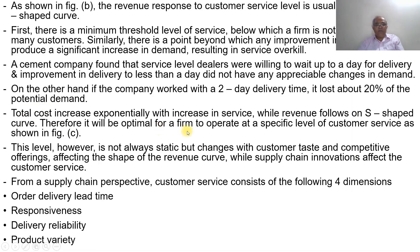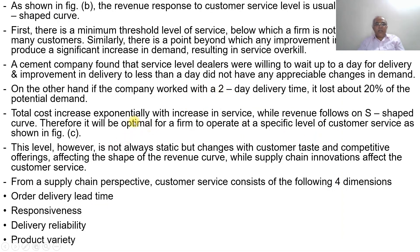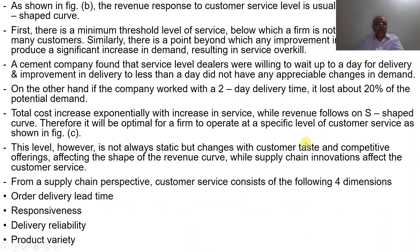Therefore, it will be optimal for a firm to operate at a specific level of customer service, as shown in Figure C, where the profit contribution is maximized. The optimal customer service level is found at the point where the gap between the S-shaped revenue curve and the exponentially increasing cost curve is greatest.